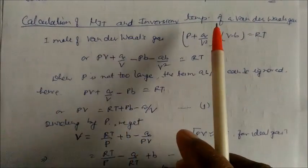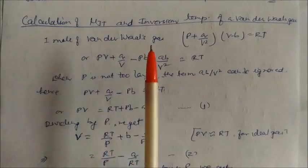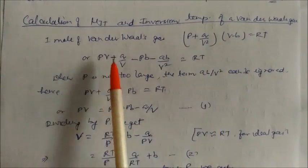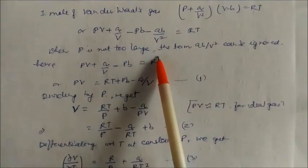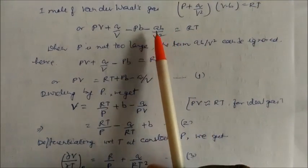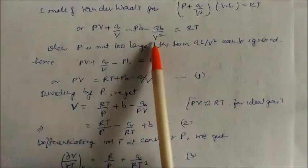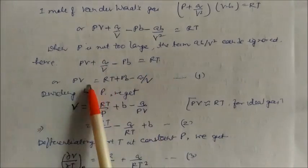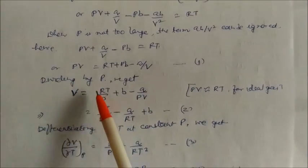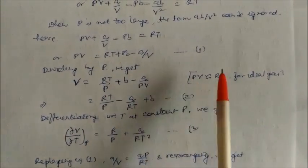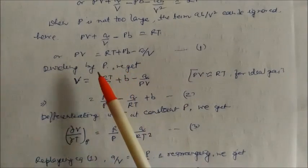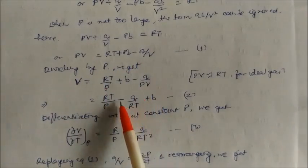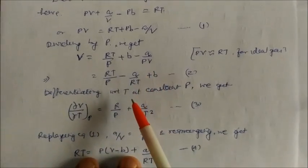Let us calculate the mu_JT and inversion temperature of a van der Waals gas. The van der Waals equation is (P + a/V²)(V − b) = RT. Expanding and multiplying, when pressure is not too large, the term ab/V² can be ignored. So we get PV equal to RT plus Pb minus a/V. Dividing by P gives V equal to RT/P plus b minus a/PV. For an ideal gas PV equals RT, so substituting: V equals RT/P minus a/RT plus b. On differentiating with respect to T at constant pressure, we get (δV/δT) at constant pressure equal to R/P plus A/RT².